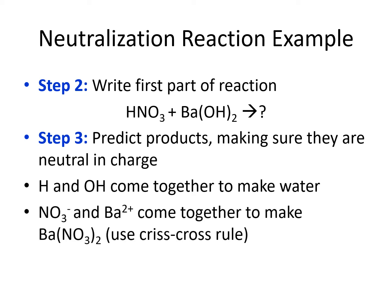We know water is always going to be one of the products of a neutralization reaction. The other product comes from the ions that are not the H and the OH. The ion in the acid that's not the H is the NO₃⁻, and the ion in the base that's not the OH is Ba. We know Ba and NO₃ will come together — always list the positive ion first. Barium has a +2 charge because it's in group 2A, and nitrate has a −1 charge, so we crisscross and get Ba(NO₃)₂ as our neutral salt.